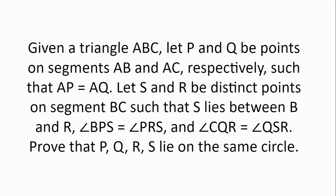Given a triangle ABC, let P and Q be points on segments AB and AC, respectively, such that AP is equal to AQ. Let S and R be distinct points on segment BC, such that S lies between B and R, and angle BPS is equal to angle PRS, and angle CQR is equal to angle QSR.